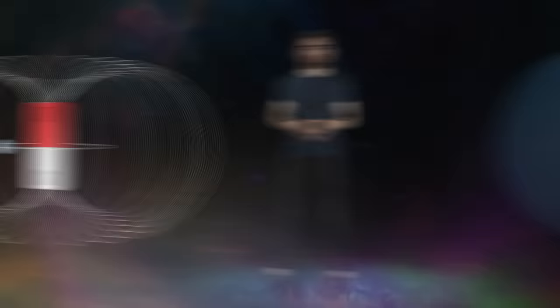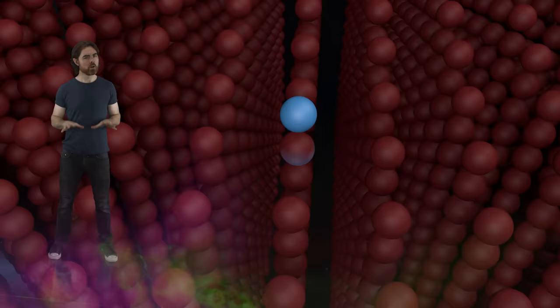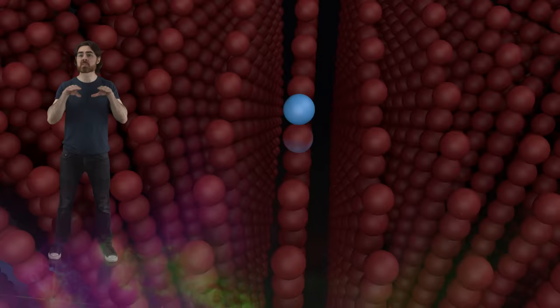Dirac came up with an idea to explain this. We called it the Dirac Sea. Imagine an infinitely deep ocean of electrons that exists everywhere in the universe. These electrons occupy all of the negative energy states all the way from negative infinity up to zero.